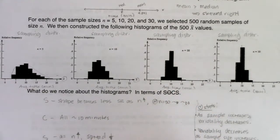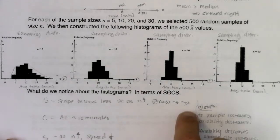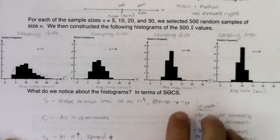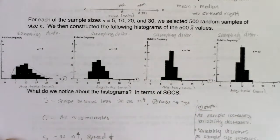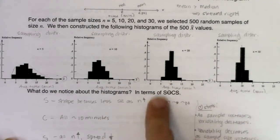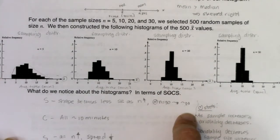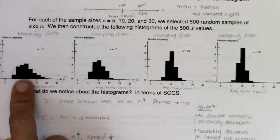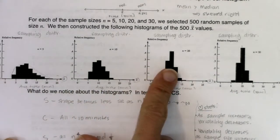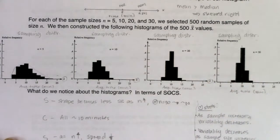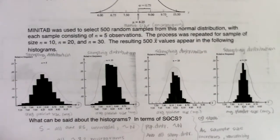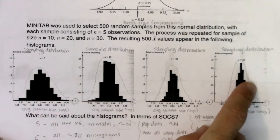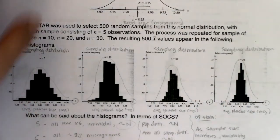Why do we care if distributions are normal? Because once you know something is approximately normal, you can start using normal CDF and calculating probabilities — all the stuff we learned in chapter 6. In example 2, I couldn't use normal CDF for small sample sizes, but I could use it once the CLT kicked in at N=30. In example 1, I could use it on all four sampling distributions.